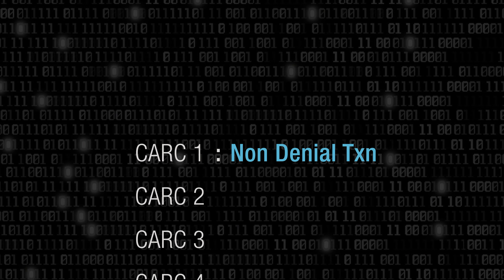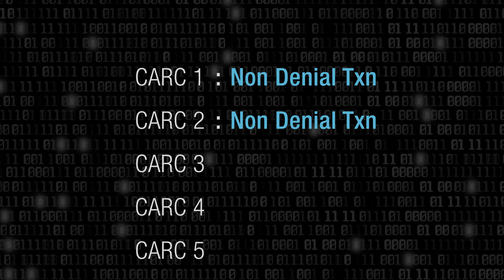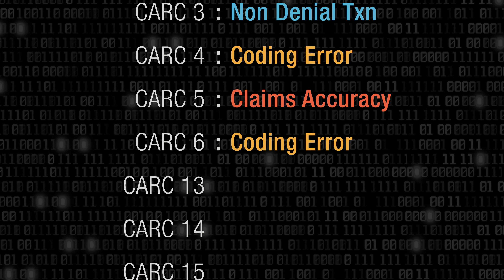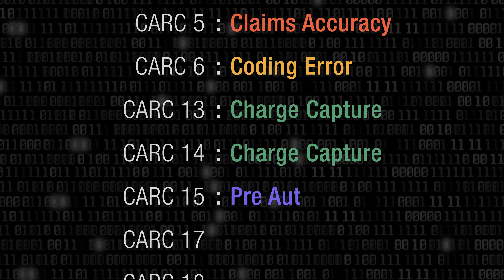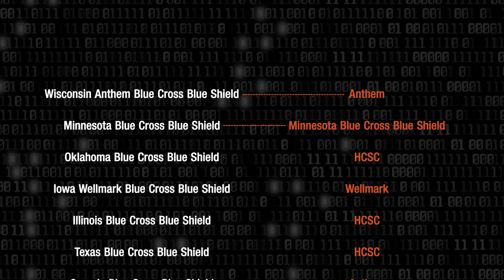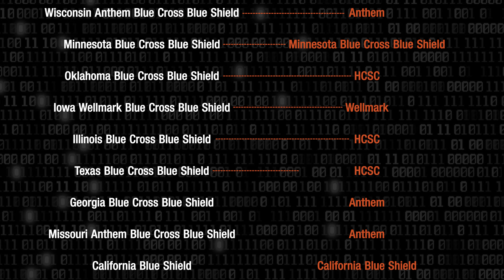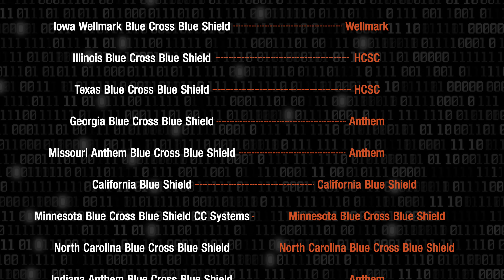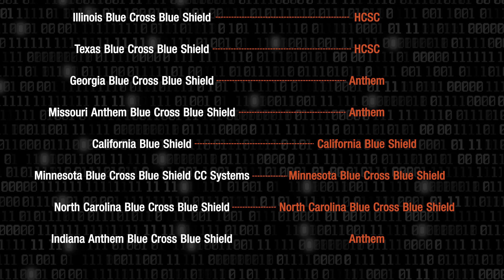Then, we map all the CARC and RARC codes to a master roll-up of denial types. And to clean up all the variations of individual payer names in your system, we map them to a master roll-up of payers.